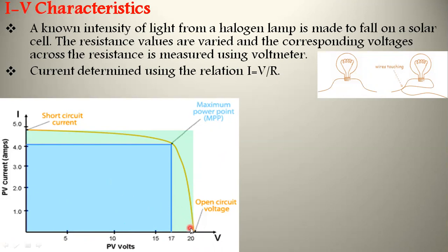Short circuit means the positive and negative leads are joined together - short circuited. In that particular moment, the potential value is zero and the current reaches the maximum value, represented as ISC.